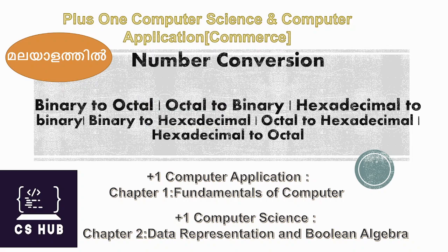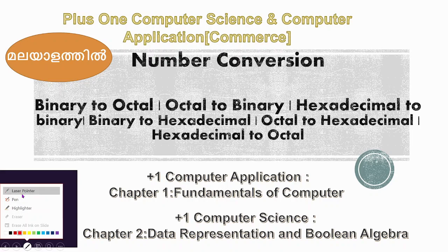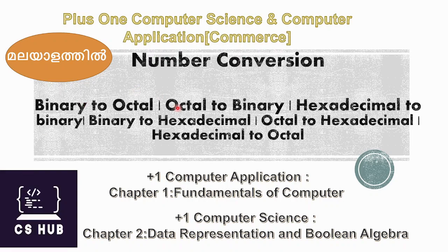Hello everyone, welcome to Computer Science. Today's topic is number conversion, Part 3. We are discussing Plus 1 Computer Science and Computer Application. Chapter 1 is Fundamentals of Computer for Computer Application, and Chapter 2 is Data Representation and Boolean Algebra for Computer Science. We have covered decimal to octal, decimal to binary, decimal to hex, and octal, binary, hex to decimal — 6 types of conversion.